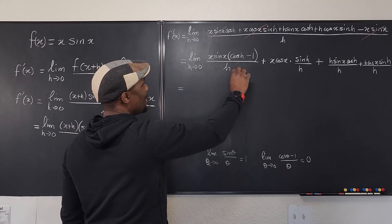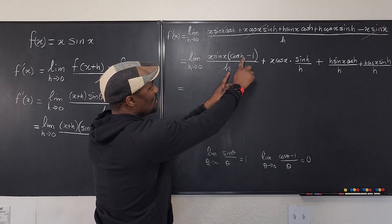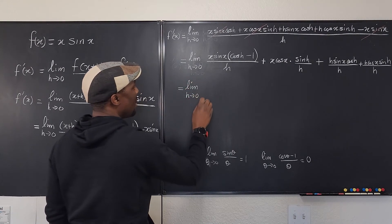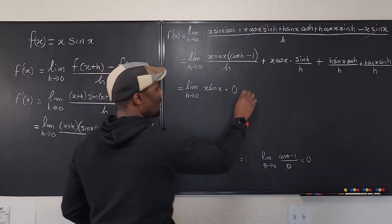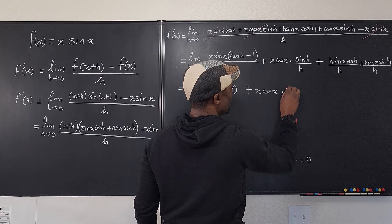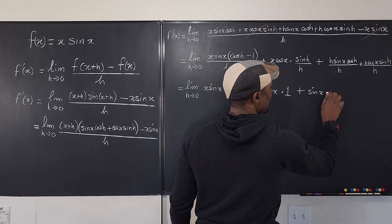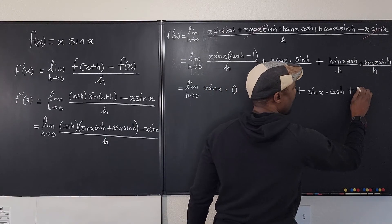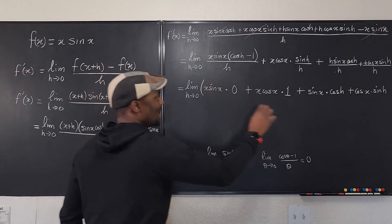So what do we have? Well, I know that this limit is going to go to zero. Cosine h minus one over h as h goes to zero is going to be zero. I'm going to end up with the limit as h goes to zero of x sine x times zero because this goes to zero. Plus, this h stays there, but this goes to one. So it's going to be x cosine x times one plus this h will cancel this h. So what you have left is sine x times cosine h plus this h will cancel this h. We can have cosine x times sine h. And all the h's are gone. So this is the limit we're dealing with.